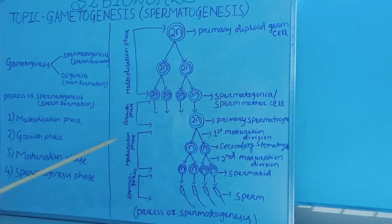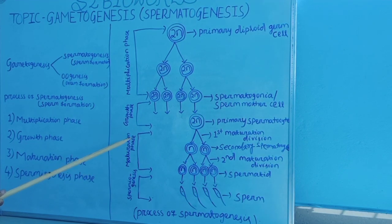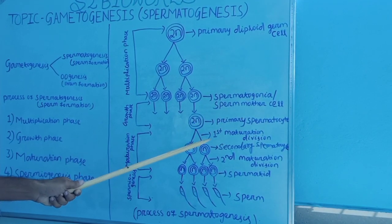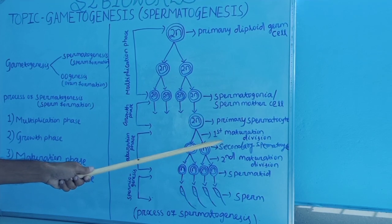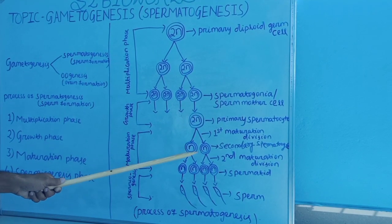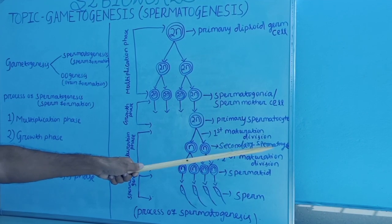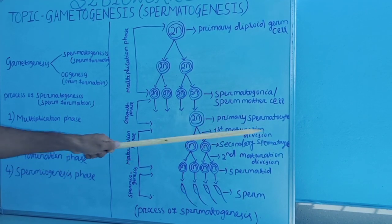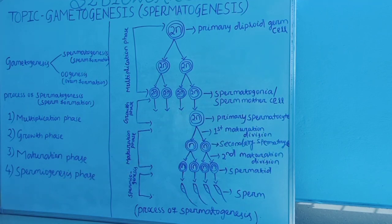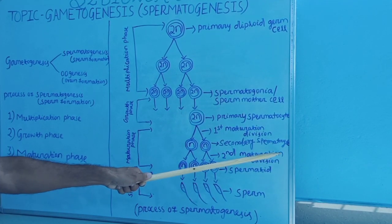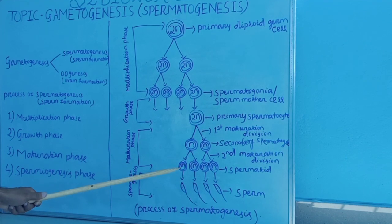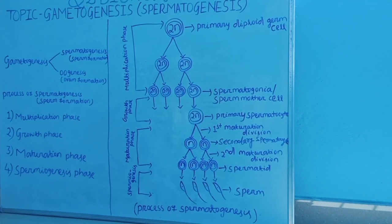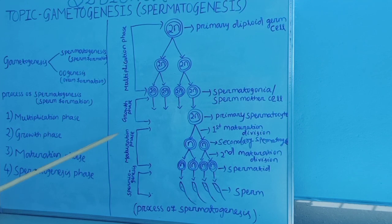After the completion of the growth phase, the maturation phase arises. In the maturation phase, the primary Spermatocyte undergoes the first maturation division and forms a haploid cell called the secondary Spermatocyte. The secondary Spermatocyte then undergoes the second maturation division and forms rounded, stationary spermatids which contain the haploid number of chromosomes.